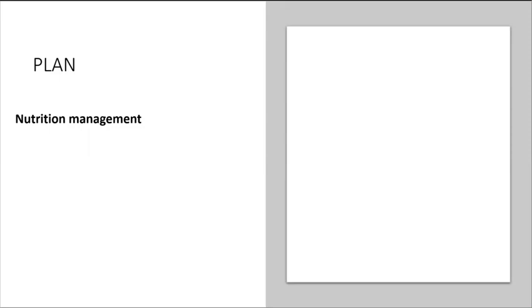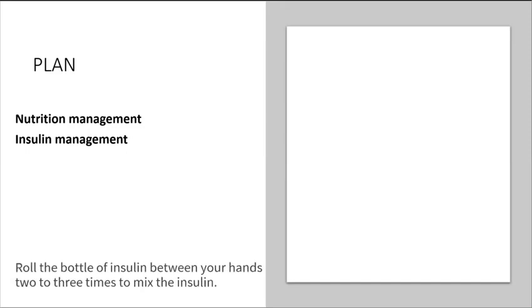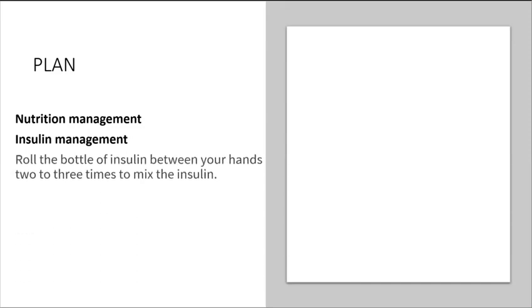If your client is going to be on insulin, you want to teach the client that before administering insulin, they need to roll the bottle of insulin between their hands two to three times to mix the insulin. Do not shake the bottle, as air bubbles can form and affect the amount of insulin drawn. You want to teach the client to wipe off the rubber part on the top of the insulin bottle using an alcohol pad or a cotton ball that has been dampened with alcohol.